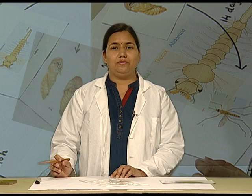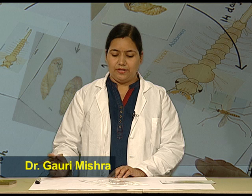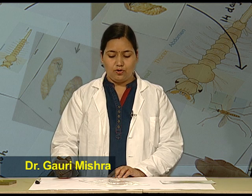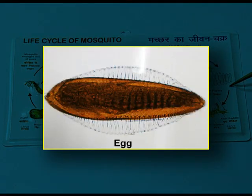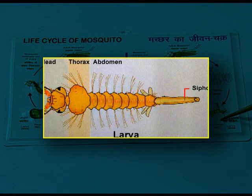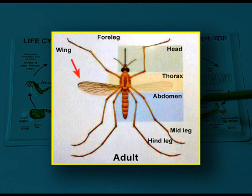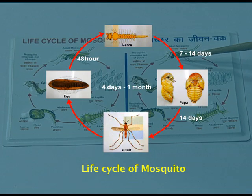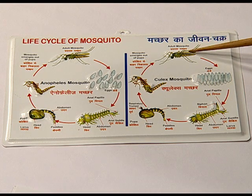Today, we are going to study the life cycle of mosquito. The life cycle of mosquito consists of four stages: the egg, the larva, the pupa, and the adult. The adult consists of two different sexes, the male and the female.